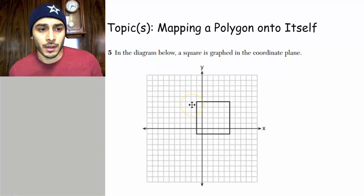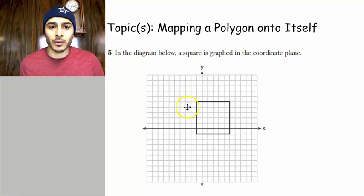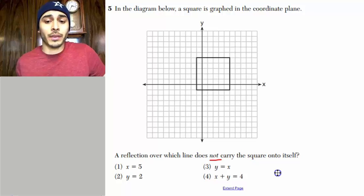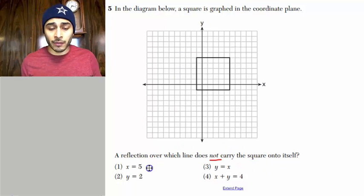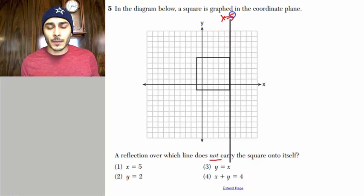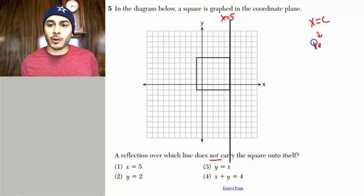Number five, mapping a polygon onto itself. For this one, we're going to have to look at each one of the options and pick the one that does not carry the square onto itself. We have, as the first option, a reflection over the line x equals 5. So then that would be the line right over here. If a line is in the form of x equals some constant, we know that it's going to be a vertical line.